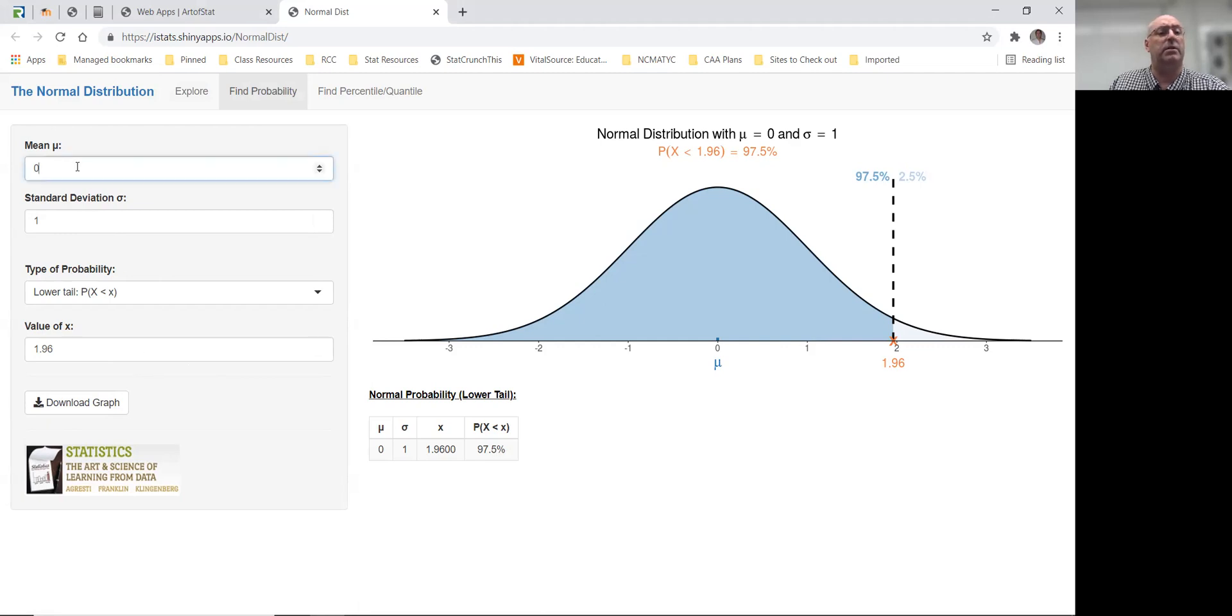Let's look at a different distribution. Let's look at the distribution of IQ scores. We want to know what percent of IQ scores are greater than 120.